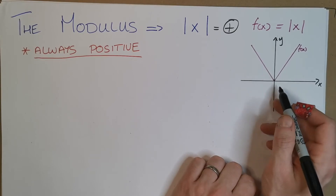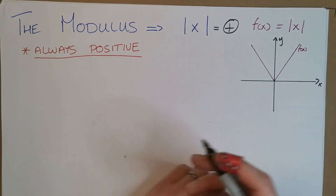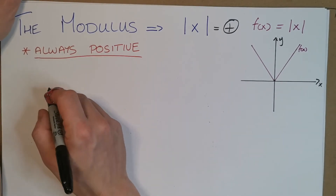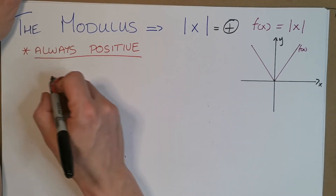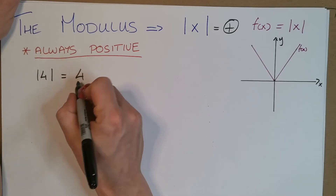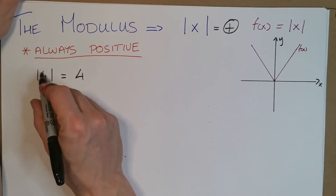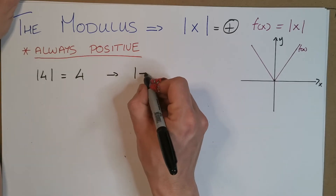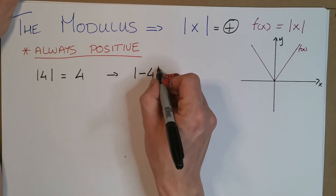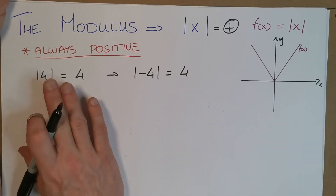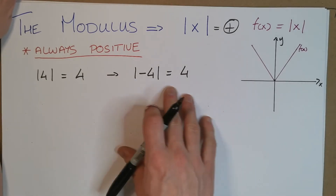So if I told you the modulus of 4, what is it? It's just 4, because we have to make sure we get a positive answer. But similarly, the modulus of minus 4 is also equal to 4. It seems very simple — we'll always get a positive answer.